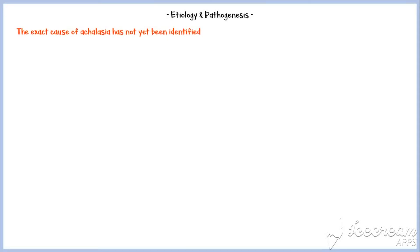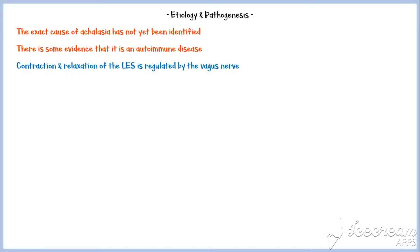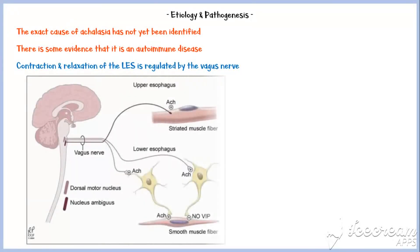Now let's discuss the etiology and pathogenesis of achalasia. The exact cause of achalasia has not yet been identified. However, there is some evidence that it is an autoimmune disorder. The contraction and relaxation of the lower esophageal sphincter is controlled by the vagus nerve through excitatory and inhibitory interneurons. When the excitatory interneuron is stimulated, the sphincter contracts, and when the inhibitory interneuron is stimulated, the sphincter relaxes.